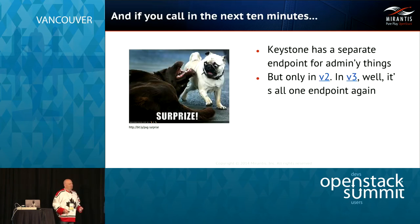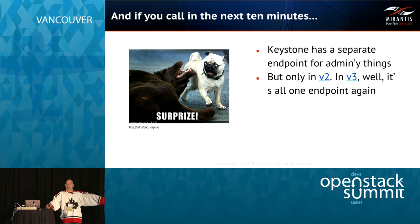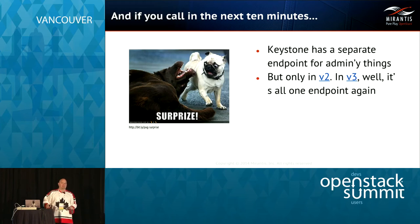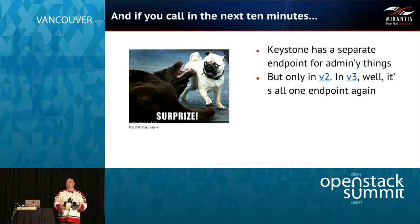To end on the admin actions topic: Keystone has an entirely separate endpoint for its administrative actions like adding a user, adding a role, groups, and similar things — but only in the v2 API. In the v3 API, it's all back into one endpoint again. No idea why, but that's the case.